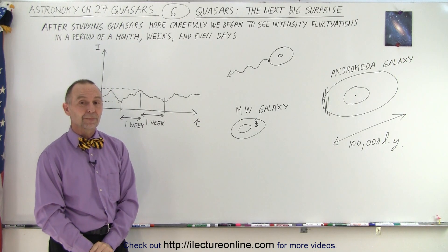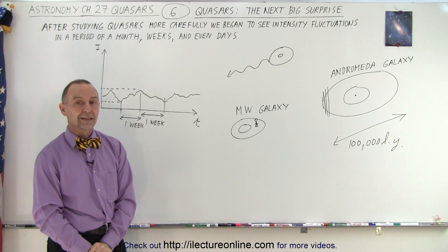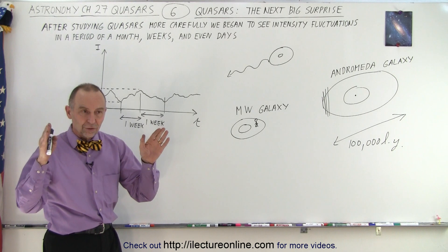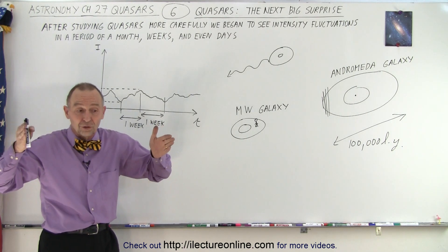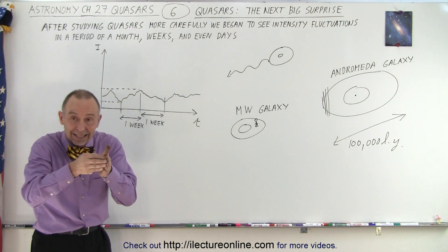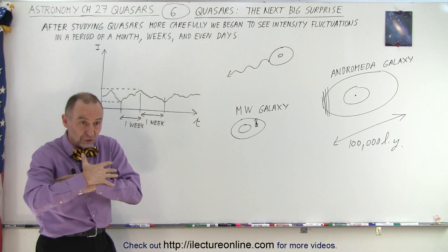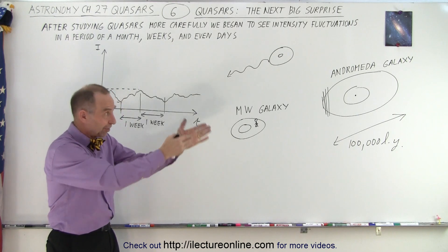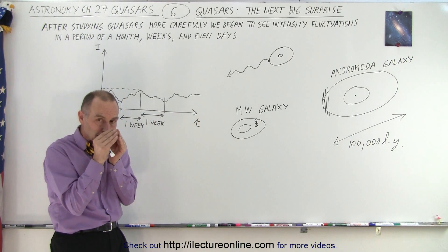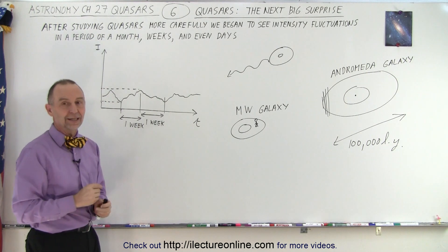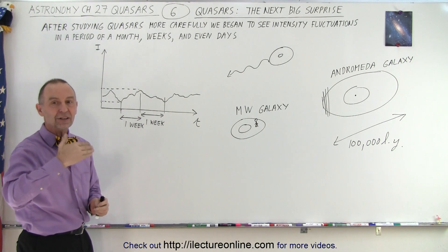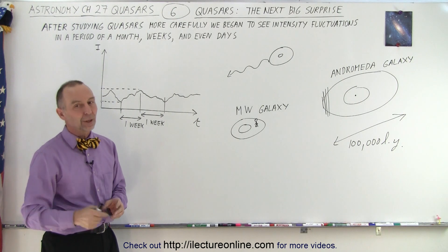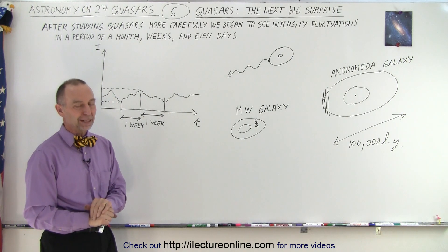So the only thing they could assume or conclude is that it's the quasar that's doing it, not the galaxy. So now what is the quasar? Well, it turns out the quasar is something inside the galaxy, very, very small, that produces enormous amount of energy. So it's not the galaxy itself because the galaxy can't do that. It's got to be something really small, as small as a light week, the time it takes light to travel in a single week, something very, very tiny. So what's going on? Well, we need another video to explain that one.